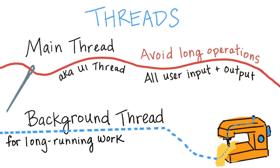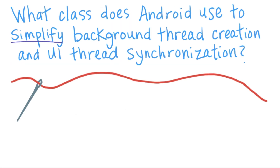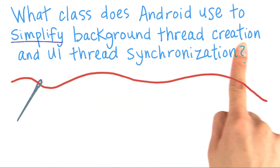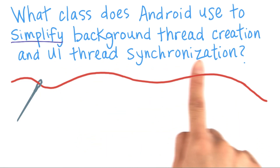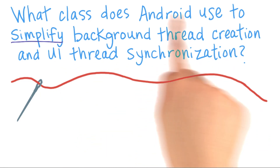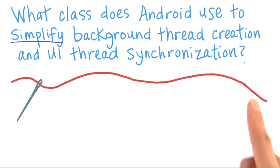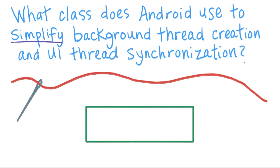So somehow we have to move the networking code off the main thread, but how are we going to do that? Well, there are several options, but let's look for the name of the Android class that simplifies background thread creation and UI thread synchronization, so that the results from the background work will come back onto the main thread and then we can use it to update our UI. Search online and figure out the answer to this question, and then enter the class name in the box.